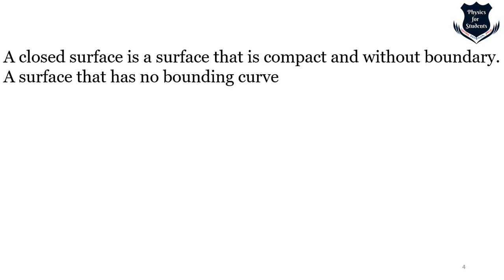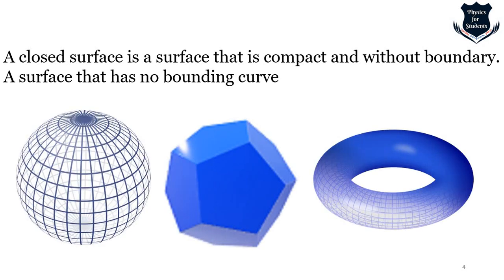A closed surface is a surface that is compact and without boundary — a surface that has no bounding curve. A surface is a two-dimensional manifold. Some surfaces arise as the boundary of three-dimensional solids; for example, the sphere is a boundary of the solid ball. Other surfaces arise as graphs of functions. A closed surface does not go on forever but also doesn't have edges — it just loops around, like a sphere or a torus.